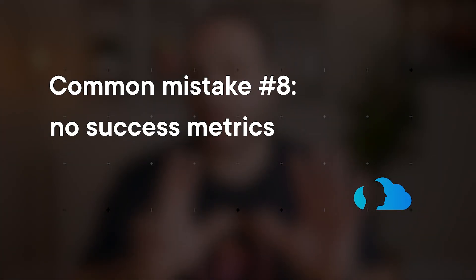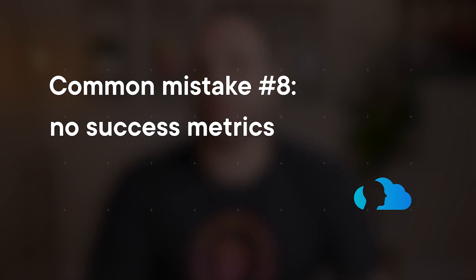Common mistake number eight is around success metrics — not having success metrics. It's crucial to know what good looks like and how we know we're making progress. This is where your CIO can step in, define and set the success metrics, and tell you we need to accomplish A, B, C for the project to be successful. Those success metrics have to be blessed by the business so that when we succeed, we can say we've hit all of the success metrics we set out to achieve.